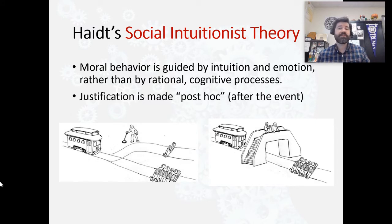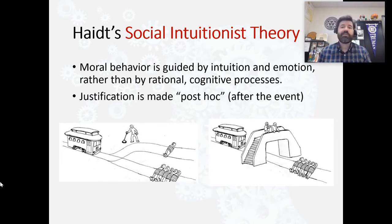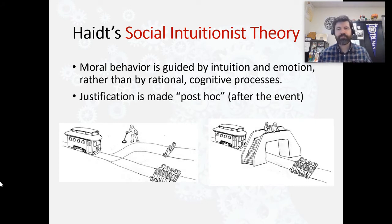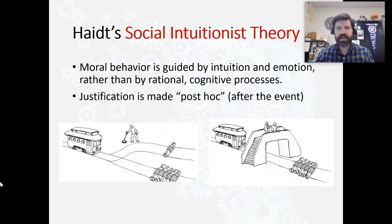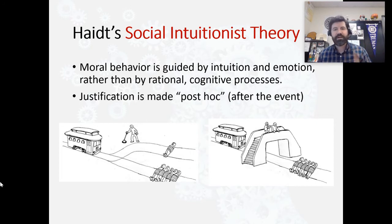If we feel something is wrong, then we would likely say it's morally unjust. Whereas if we feel like maybe it's not that bad, then sure, it's okay. In the social intuitionist theory, the justification is made post hoc, or after the event has already occurred. You are put in a situation, you feel a certain way, your gut tells you what to do, and then after the event is over, you can retroactively justify it because of the emotion itself.